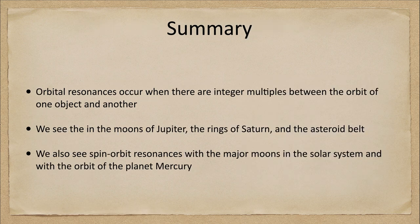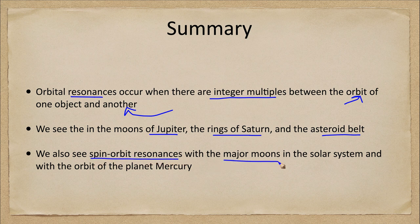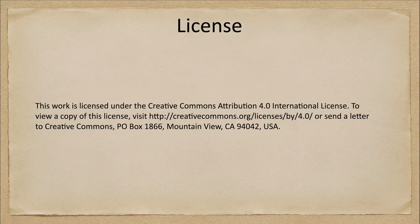Orbital resonances occur when there are integer multiples between the orbits of one object and another. We see this in the moons of Jupiter, the rings of Saturn, and the asteroid belt. We also looked at spin-orbit resonances, which occur with our moon and other major moons in the solar system, and with the orbit of the planet Mercury. That concludes this summary of orbital resonances. We'll be back next week for another special topic in astronomy — until then, have a great day everyone, and I will see you in class.